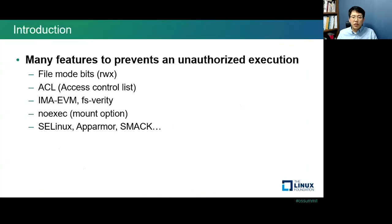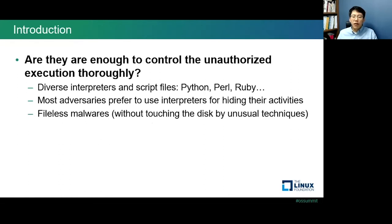In the Linux system, there are many features to prevent or limit unauthorized execution, such as file mode bits, access control list, IMA EVM, FS Verity, no-exec mount option, and mandatory access control frameworks. I think you have heard about them if you are interested in hardening security for Linux systems. However, do you think they are enough to control unauthorized execution? In my opinion, they are not — because of interpreters and script files such as Python, Perl, and Ruby.